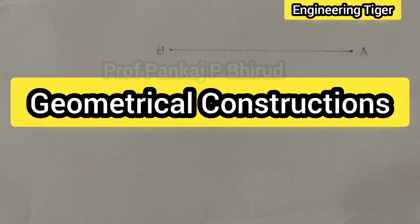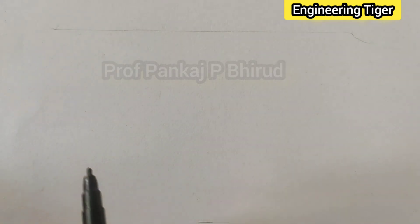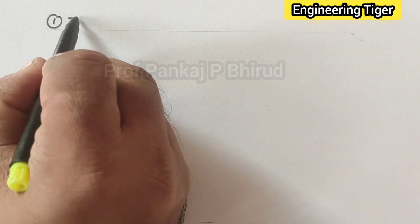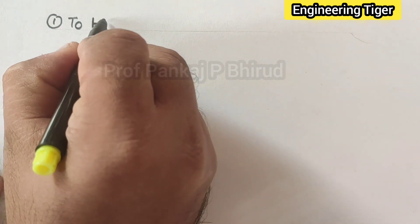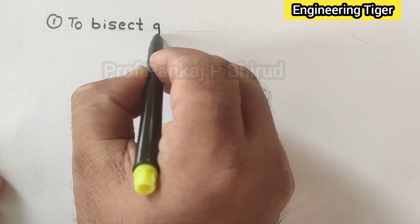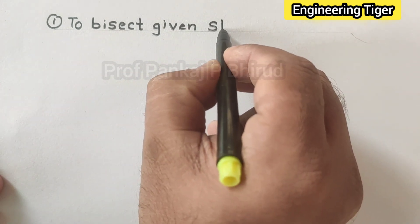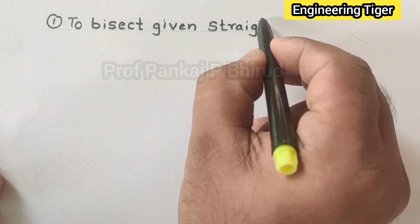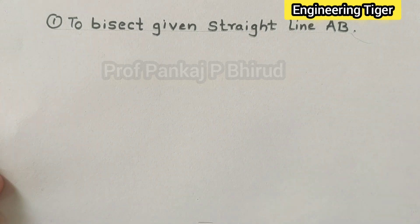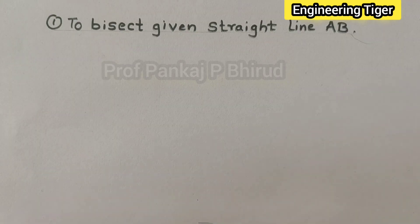In today's session we are going to learn some geometrical constructions. The first construction is to bisect a given straight line — that means we are given a straight line AB and we have to divide it into two equal parts.